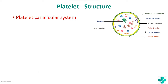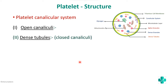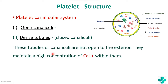There are two types of canaliculi systems. The first is the open canaliculi, which are especially important when platelets are activated — the secretions are released from these canaliculi to the exterior. The second type is the dense tubules, also called closed canaliculi. These are loaded with calcium and are responsible for the contractile function of the platelets.